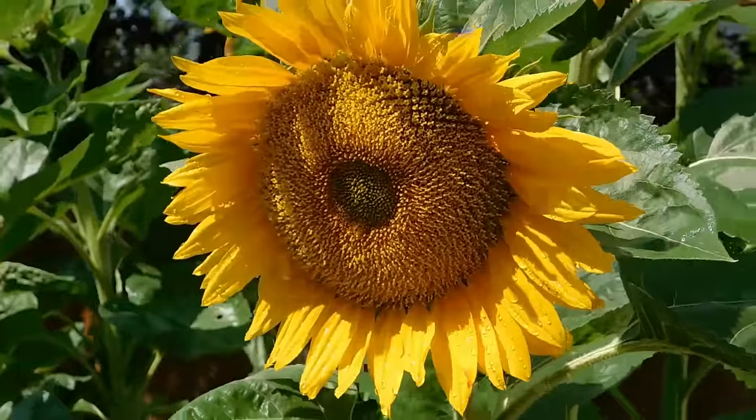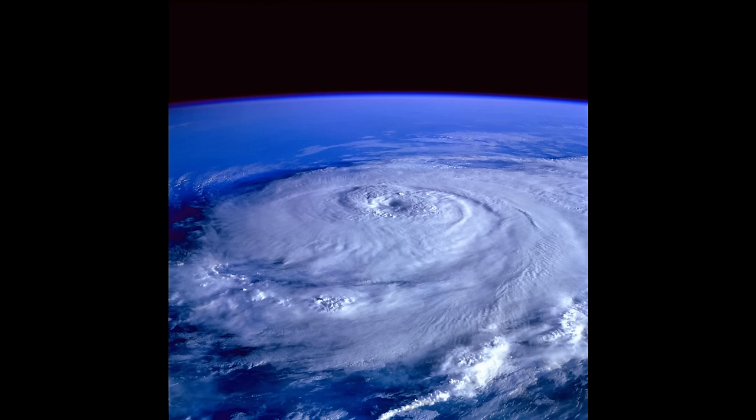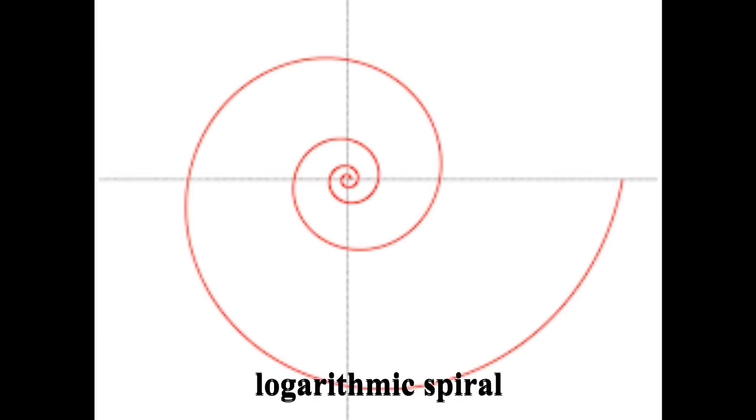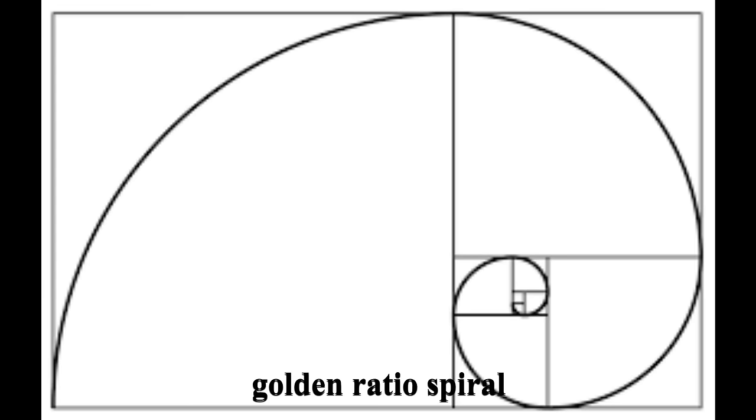Spirals are absolutely everywhere in nature, from galaxies to sunflowers, wave formations, and wind types. But surprisingly, there are really only four types: the Fibonacci spiral, the logarithmic spiral, the Gaussian golden ratio spiral, and the Archimedes spiral. From an engineering build-it-and-see-what-it-does point of view, you could say that the Fibonacci, golden ratio, and logarithmic are pretty much the same thing, which breaks them down into two basic groups.